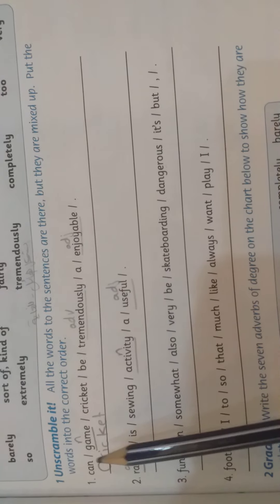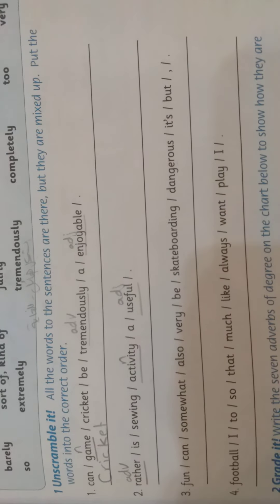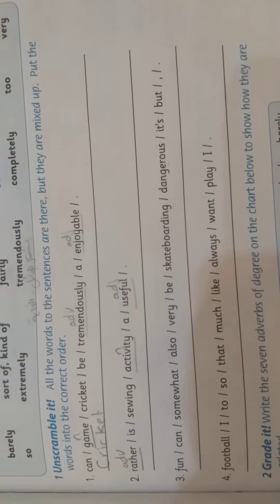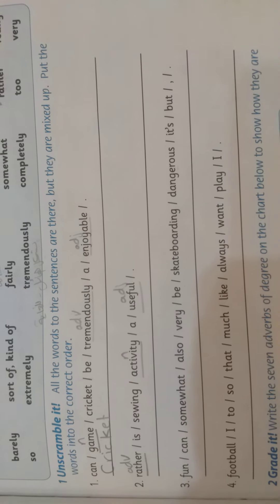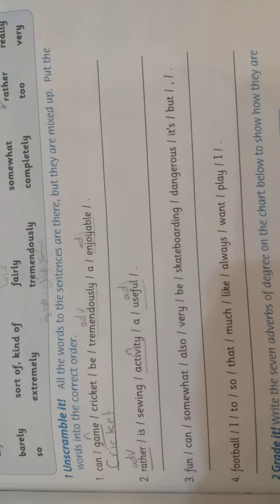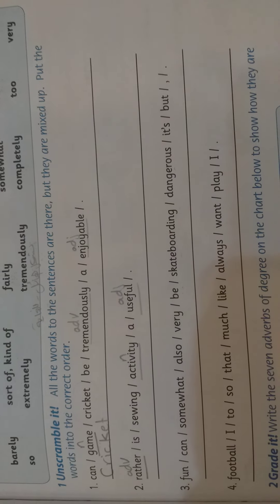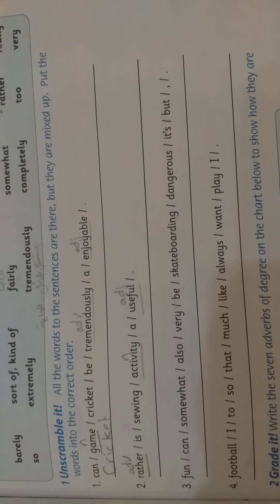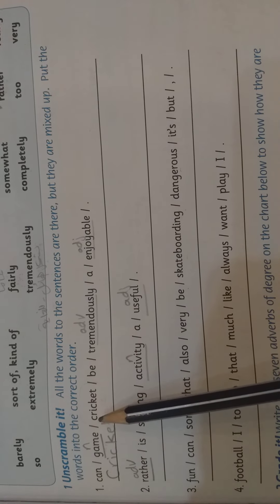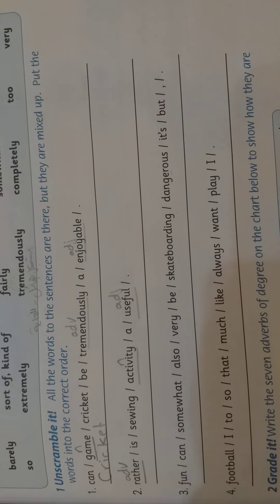Now, let's look at the first sentence. We have can, game, cricket, be, tremendously, enjoyable. The first thing that you have to do is to look for the subject. Where is the subject in this sentence? What are we talking about? الفاعل دايما هو الإشي اللي إحنا بنحكي عنه بالجملة. We are talking about the cricket. So, cricket is the subject. Cricket means لعبة الكرة والمضرب.